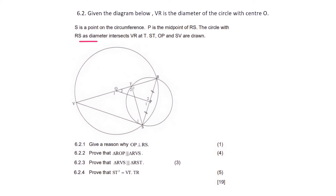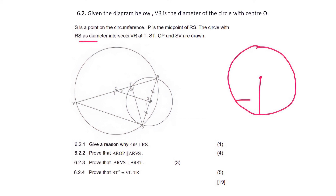That's just because — remember the very first theorem we learned in grade 11 — if you have a circle and a line from the center that goes to the midpoint of a chord, then that angle is automatically 90 degrees. So we can say: line from center to the midpoint of the chord.